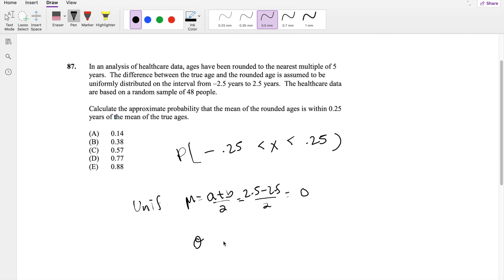And likewise, the standard deviation is going to be equal to the square root of B minus A squared over 12. So in this case, B will be 2.5 minus negative 2.5, which becomes 5, squared over 12. So this is equal to square root of 25 over 12 as the standard deviation.